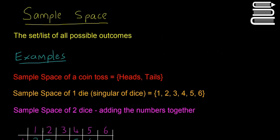Another example is if you roll a die — which is the singular of dice — then the sample space is just a list of all the numbers you can get, which is 1, 2, 3, 4, 5, 6.